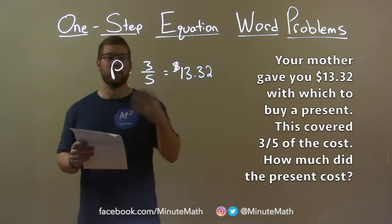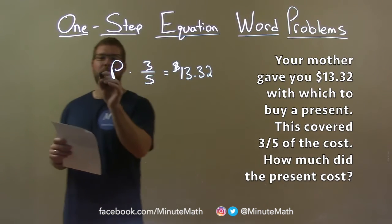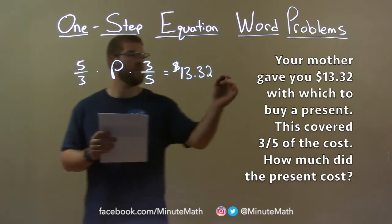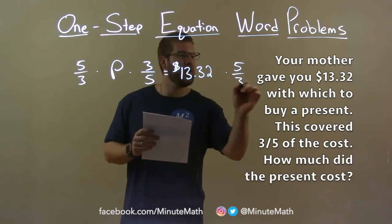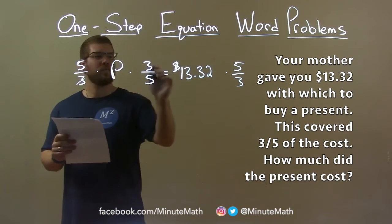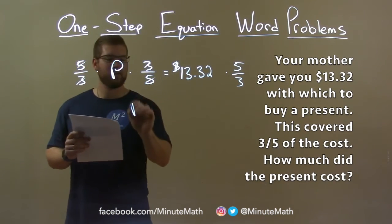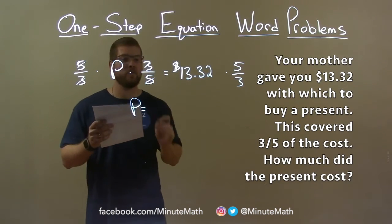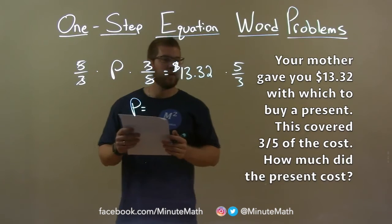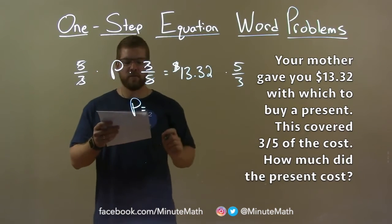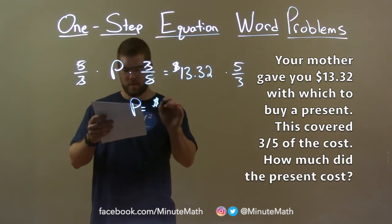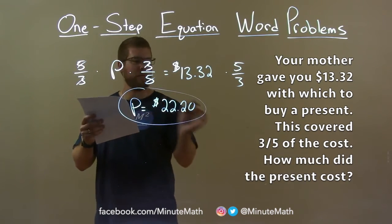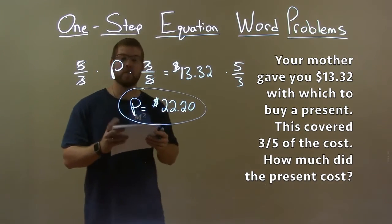P is being multiplied by 3/5. To eliminate that, we multiply both sides by the reciprocal, 5/3. The 3s cancel and the 5s cancel, giving us P by itself — the cost of the present. 13.32 times 5/3 comes out to be $22.20 — the cost of the present.